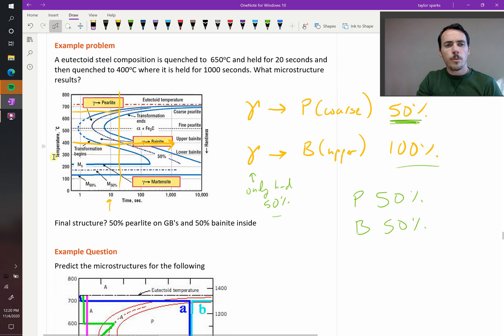Now you might ask, well, when we held this down here, why wouldn't the perlite turn into bainite? Perlite cannot turn into bainite, because perlite is big, thick grains. And if you hold it, it's never going to form smaller grains, because that's increasing its surface energy penalty. So if anything, things want to coarsen. You could turn bainite into perlite if you held it at high temperatures. If you did the bainite first, and then you did the perlite, all of your bainite would start to turn into perlite because it would coarsen. But you'll never go the other way. It'll never start from really thick grains and all of a sudden get smaller ones with the heat treatment. So that would be our final structure, 50% perlite on the grain boundaries, and then 50% bainite on the inside.